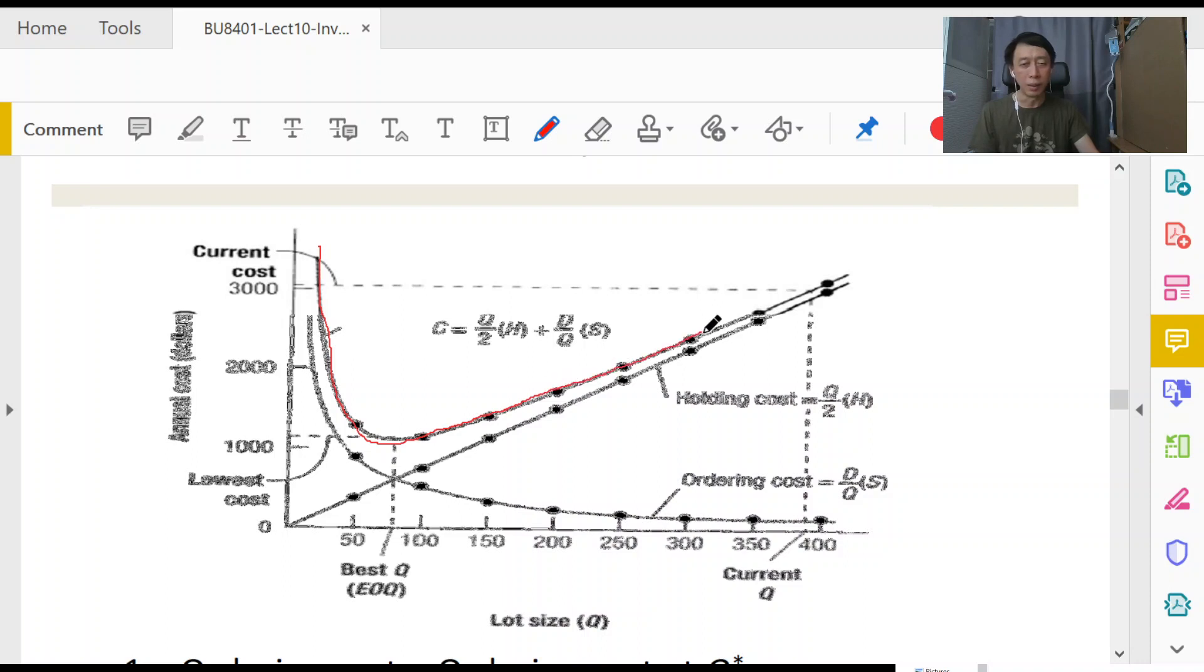This is the point that we are interested in. This is our EOQ point. Our EOQ point is here, and our operating level, the total cost, is the minimum if we choose our quantity to order at EOQ.